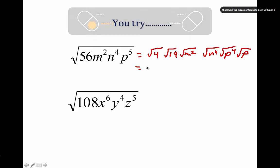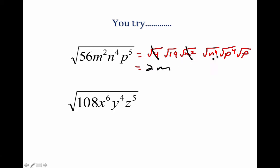And I will get a 2. Done there. M. Done there. N squared. Done there. P squared. Done there. What's under the radical? 14P.